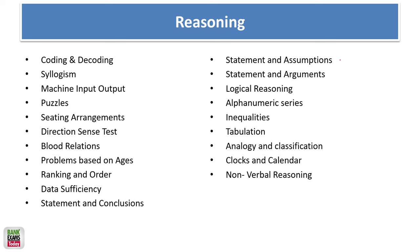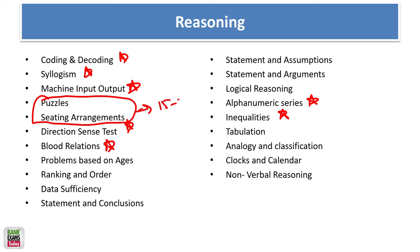In reasoning ability, if you are new to reasoning, start with syllogism, coding-decoding, machine input-output, blood relations, direction sense test, inequalities, and alphanumeric series — these topics are very easy and can help you crack the exam quickly. If you have experience with reasoning, focus on puzzles and sitting arrangement — you'll find like 15-20 questions from that topic. Practice sitting arrangement heavily as it takes a lot of time to solve.